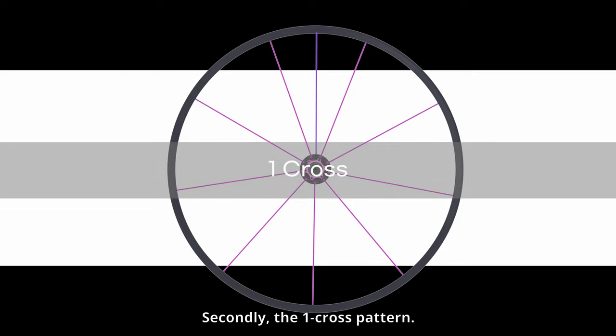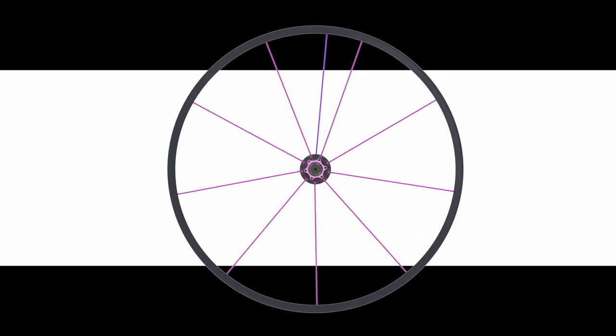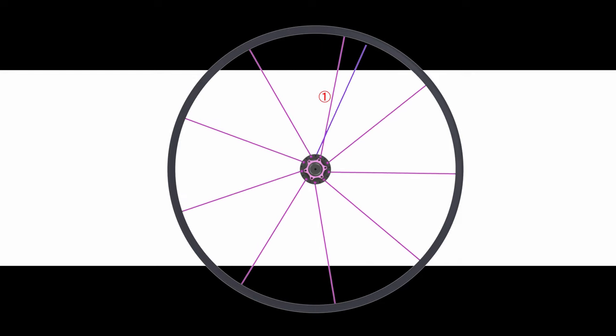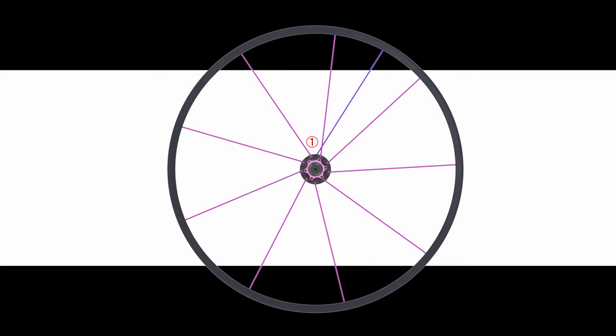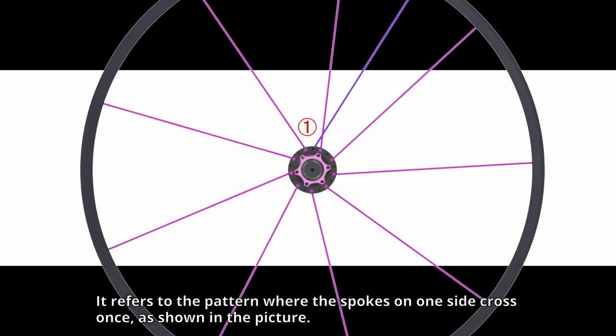Secondly, the one-cross pattern. It refers to the pattern where the spokes on one side cross once, as shown in the picture.